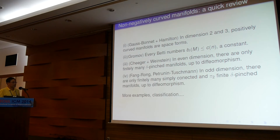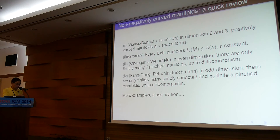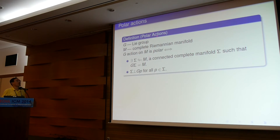People are really trying to look for more examples of manifolds with positive or non-negative curvature, or otherwise trying to find a classification of such manifolds. Unfortunately, it's very difficult and seems far away. I'm going to talk about some special manifolds admitting a special kind of action — so-called polar actions.